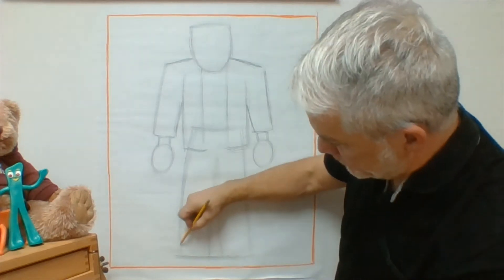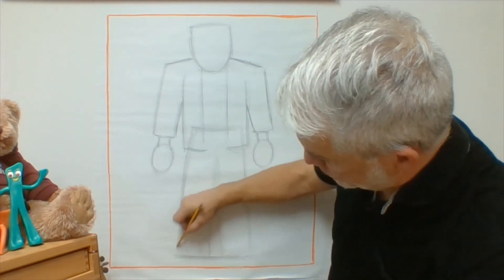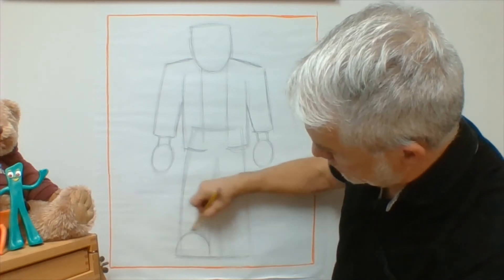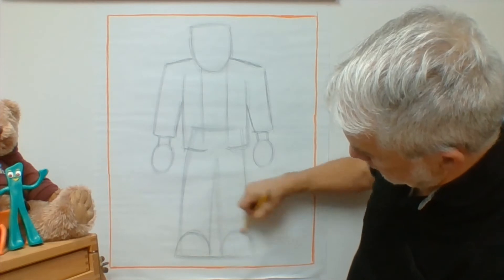Now onto the feet. All I have to do is make two half circles. There's a half circle right here and a half circle right here.